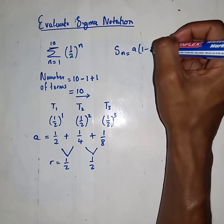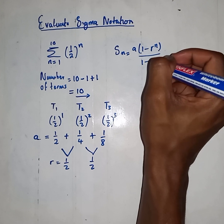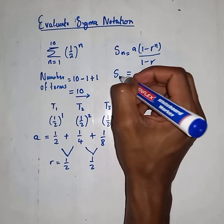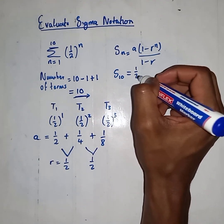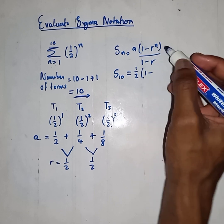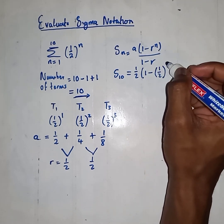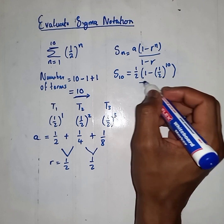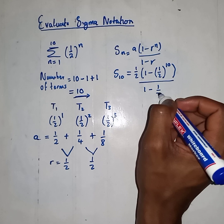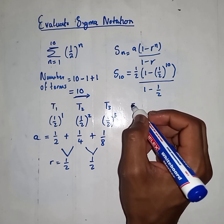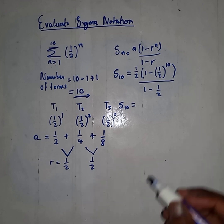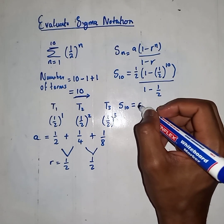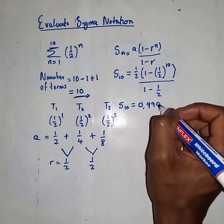The formula is A times (1 minus R^N) divided by (1 minus R), for N=10. A value is 1/2, R value is 1/2 to the power 10, divided by 1 minus 1/2. S10: if you take your calculator and punch it, you should get 0.999.